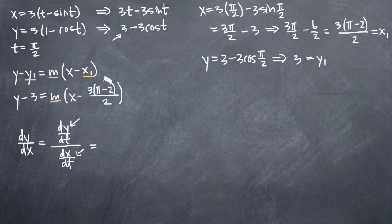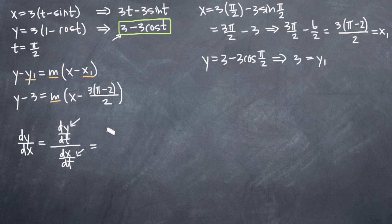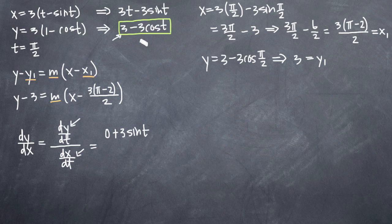Let's take the derivative of our equation for y with respect to t. The derivative of 3, the constant term, is just 0. The derivative of negative 3 cosine t is positive 3 sine t — it's because the derivative of cosine is negative sine, but with the negative already there, it turns into a positive.